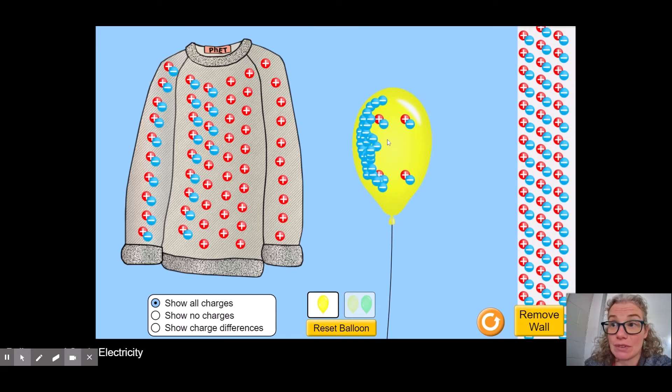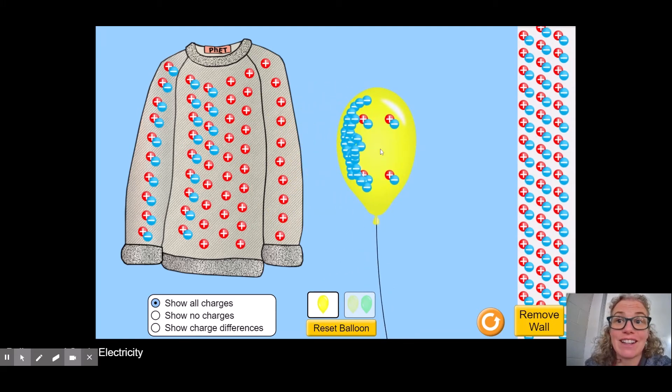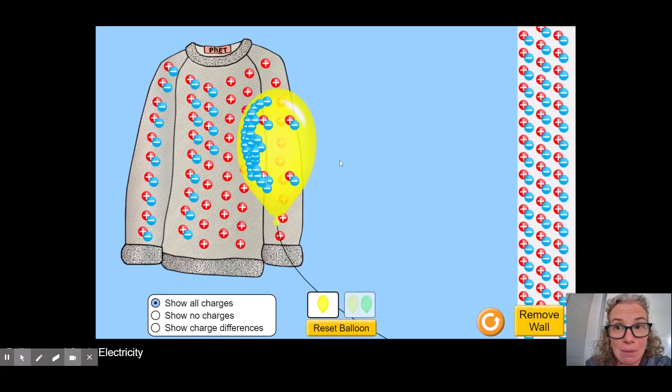Now, if I let go of the balloon with my mouse, you will see the balloon, which has an overall net negative charge, will be attracted to the sweater, which has a net positive charge, because opposites attract in electricity.